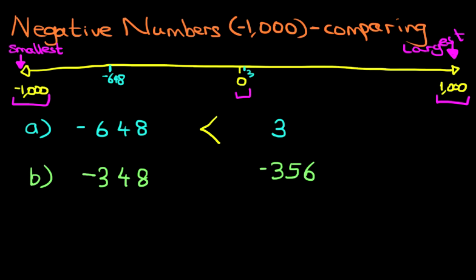Have a look at the number line. We're going to have minus 348 here. I'll write this on top. Minus 356 here. The smaller number is minus 356. That is the smaller number.